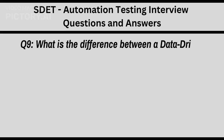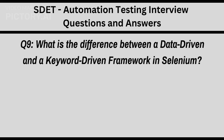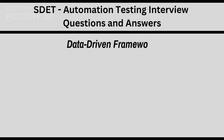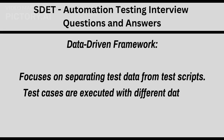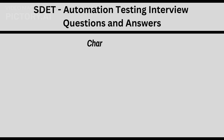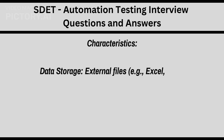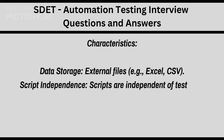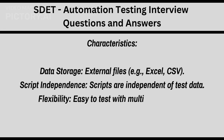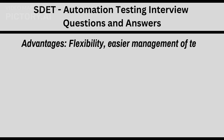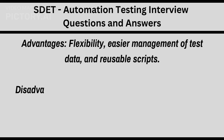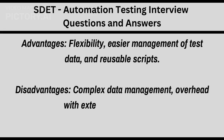Q9. What is the difference between a data-driven and a keyword-driven framework in Selenium? A data-driven framework focuses on separating test data from test scripts. Test cases are executed with different data sets stored in external files such as Excel or CSV. Scripts are independent of test data, making it flexible and easy to test with multiple data sets. Advantages: flexibility, easier management of test data, and reusable scripts. Disadvantages: complex test data management and overhead with external data sources.